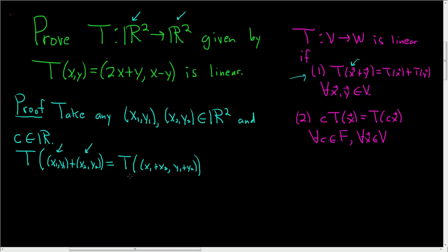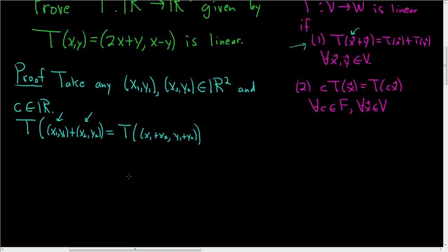And now we'll go ahead and apply T to this new vector. So this is equal to, let's see, so this is our x coordinate. So that's going to go here. So it's going to be 2 times x1 plus x2, and then plus y. Well, this is our y. So it'll be plus y1 plus y2, comma. And then we have x minus y. So our x is x1 plus x2 minus, and now I really should put the y in parentheses. So y1 plus y2.